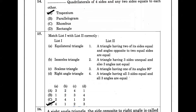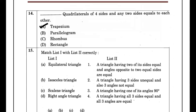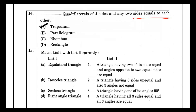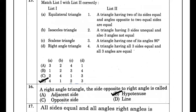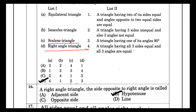In a quadrilateral with four sides, if any two sides are equal to each other but one pair is different, that is a trapezoid. The types of triangles include equilateral triangle, isosceles triangle, scalene triangle, and right-angle triangle.